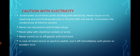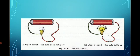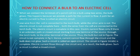So these are the precautions we must take care of while using electricity. Next, how to connect a bulb to an electric cell. You can see one is the bulb and the other is the cell. When we connect the terminals of a pencil cell to a bulb using two wires, the bulb glows. This happens because we provide a path for the current to flow, and this path is called the electrical circuit.